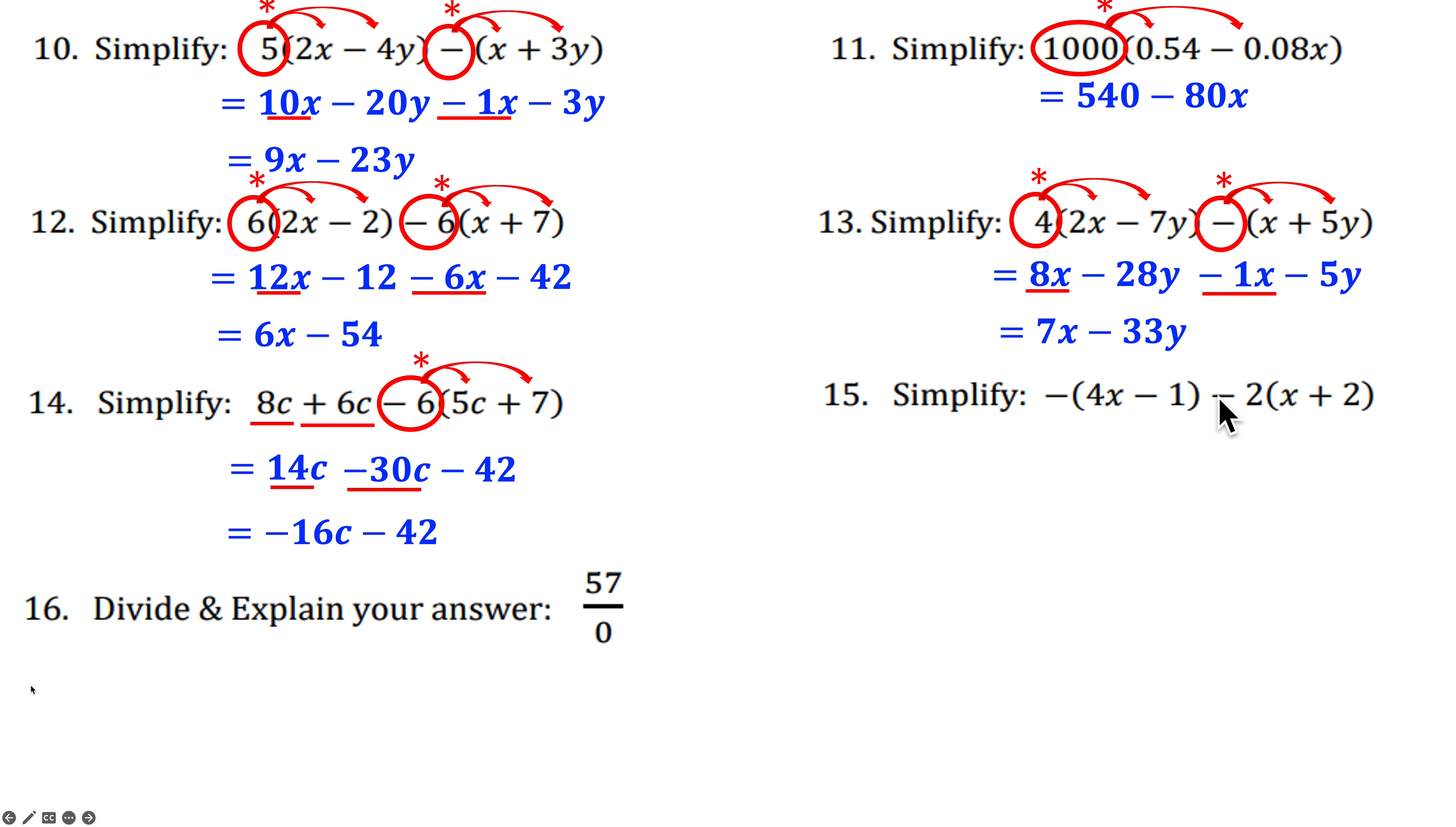15. Distribute the minus. And distribute the minus 2. So this becomes negative 4X plus 1. Just a sign change. Then negative 2 times X is minus 2X. Negative 2 times 2 is minus 4. And we'll combine like terms. So we have signs are the same. Add the 4 and the 2 and keep the sign. Negative 6X. 1 minus 4. Keep the minus. 4 minus 1 minus 3.